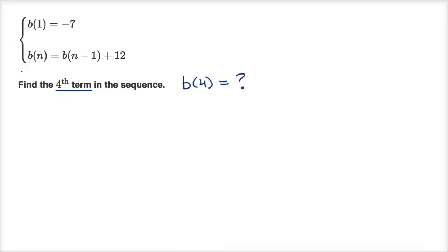If we just apply this, b(4)—since b(n) equals b(n-1) plus 12—is going to be b(4-1) plus 12. Well, four minus one is three, so it's going to equal b(3) plus 12.